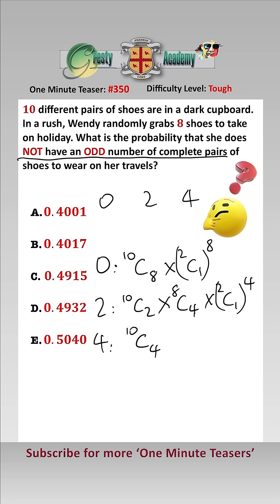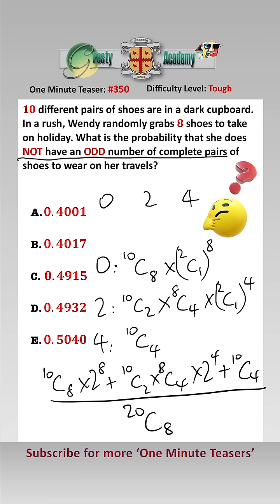So the probability, we have to add all these up, is 10C8 times by two to the power of eight, add 10C2 times 8C4 times two to the power of four, add 10C4, all over the total number of ways of picking eight shoes from 20, which is 20C8. And when we work all that out, it gives us 0.4932, which is answer D.